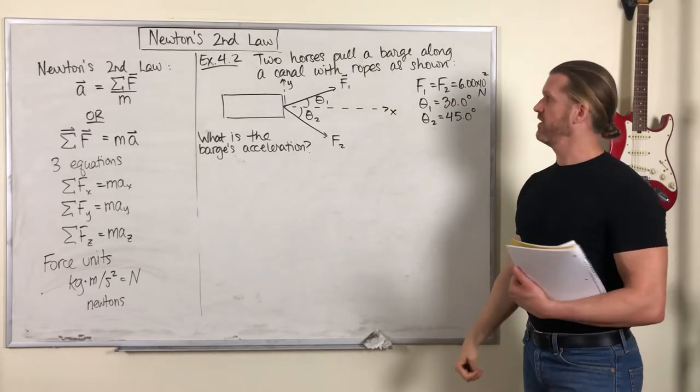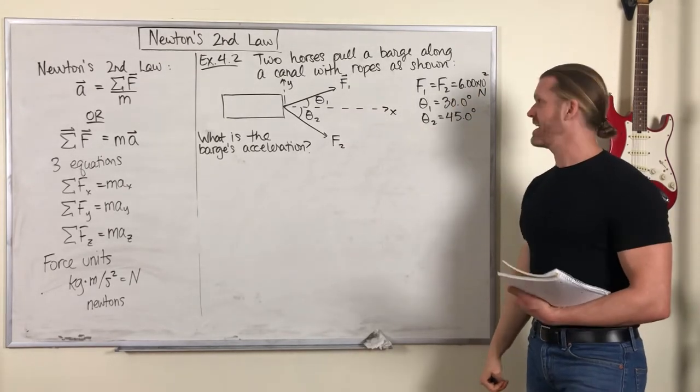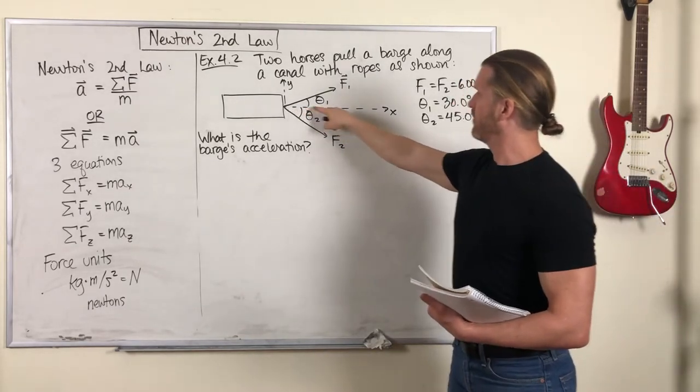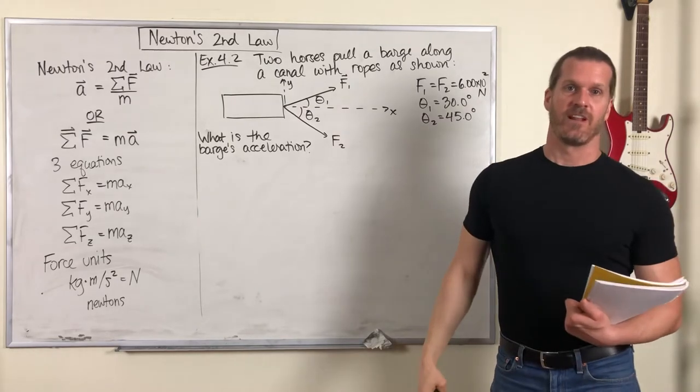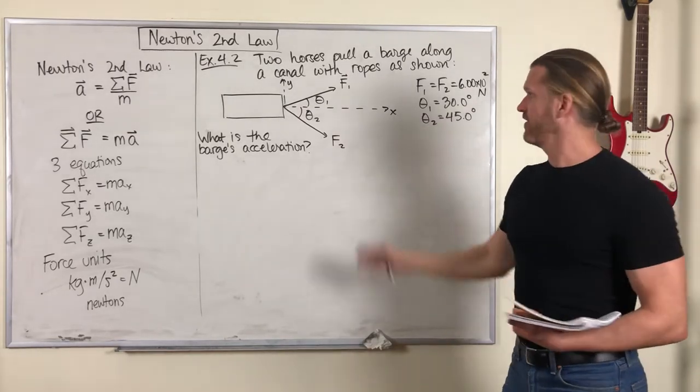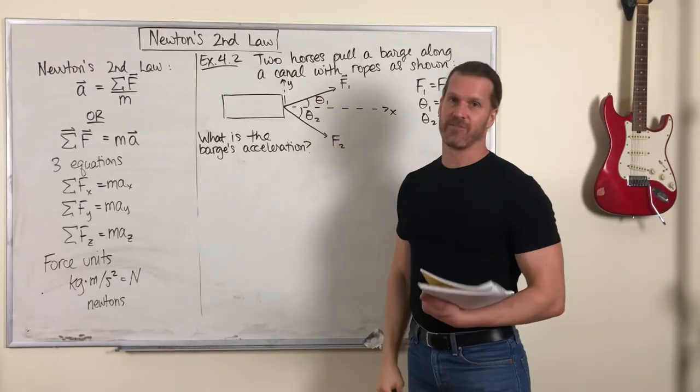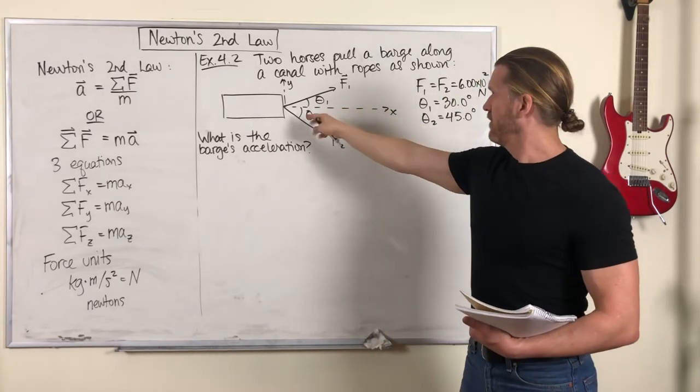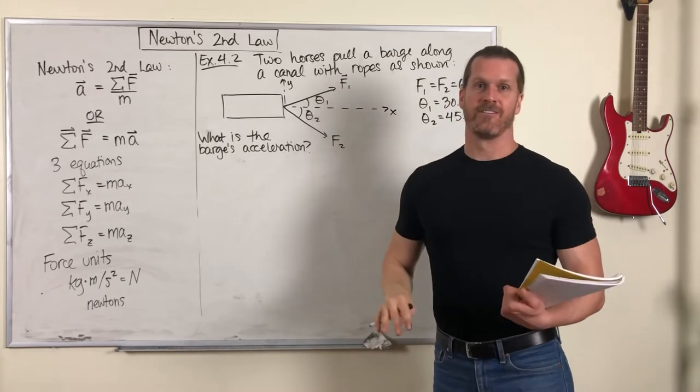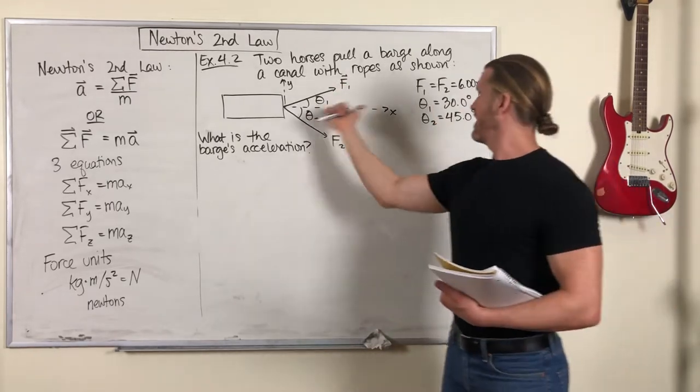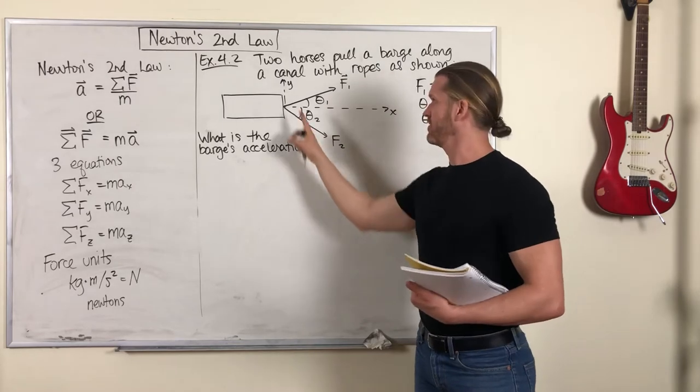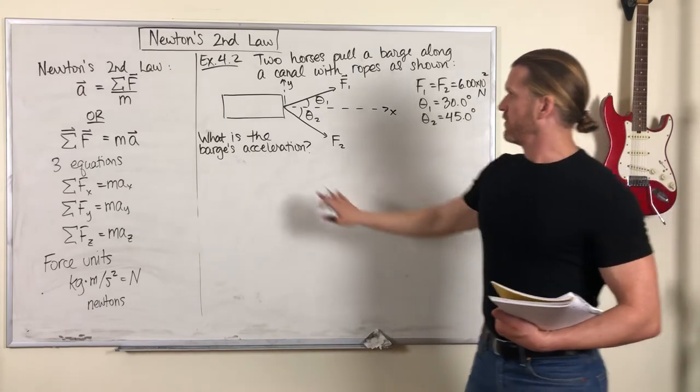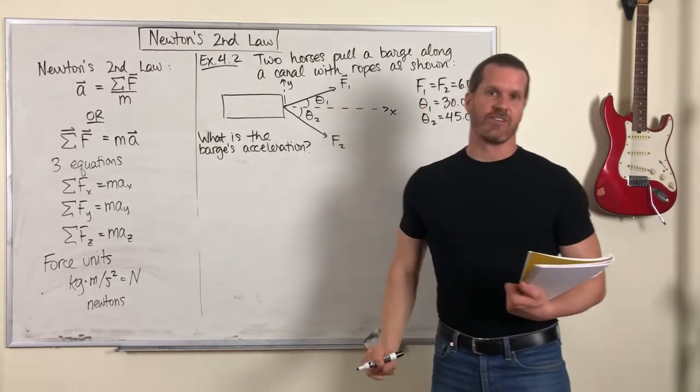Both horses are the same strength, both pulling with 600 Newtons of force, but they're pulling at slightly different angles, 30 degrees and 45 degrees with respect to this forward direction. I'm calling that forward direction X and the perpendicular direction Y. So again, this is a top view looking down, so both X and Y are in the horizontal plane.